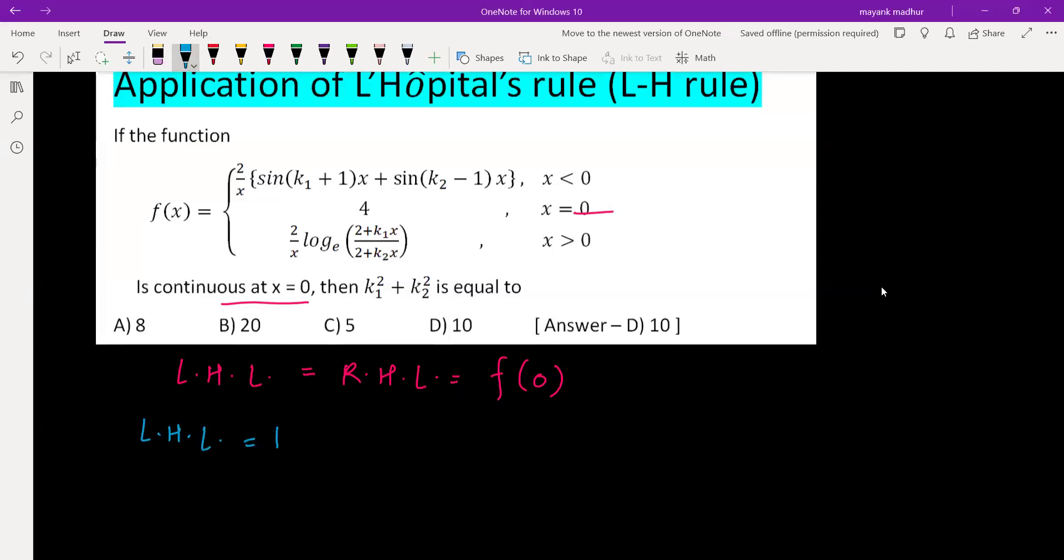What will be LHL? LHL will be limit x tends to 0 minus, and we'll be selecting the first part when x is less than 0. So it will be [sin(k₁+1)x + sin(k₂-1)x]/x multiplied by 2.